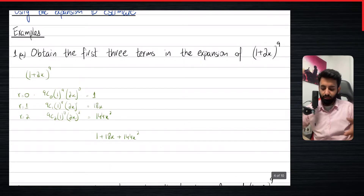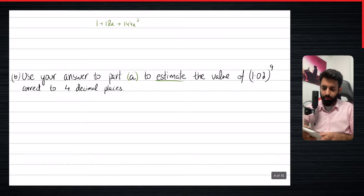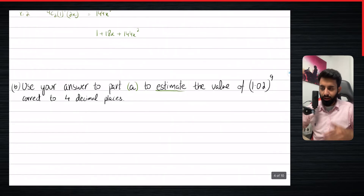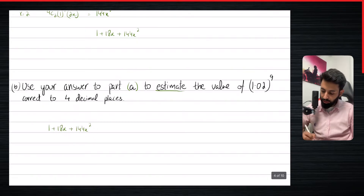You may be wondering that this is really new, but it's not. What we're about to do is something new for us. It says use your answer to part A to estimate the value — notice how it says estimate. You may be wondering why can't we just do 1.02 to the power nine? Well, because the question says you have to use your answer to part A. Had the question said hence or otherwise — which it's not going to say in a question like this — then you could have used whatever method you wanted. So let's copy the expansion from the previous part. The question is, how exactly do we use our answer to estimate the value of 1.02 to the power nine?